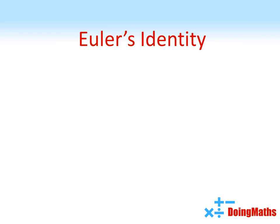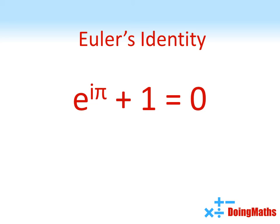And one final thing to leave you with is a particularly beautiful equation known as Euler's identity, named after a Swiss mathematician, Leonard Euler. It looks like this: E to the power of I pi, add one equals zero. What is so incredibly beautiful about this equation is it features five of the most important numbers in mathematics. You've got zero and one, you've got E, pi, and you've got I — the square root of negative one.